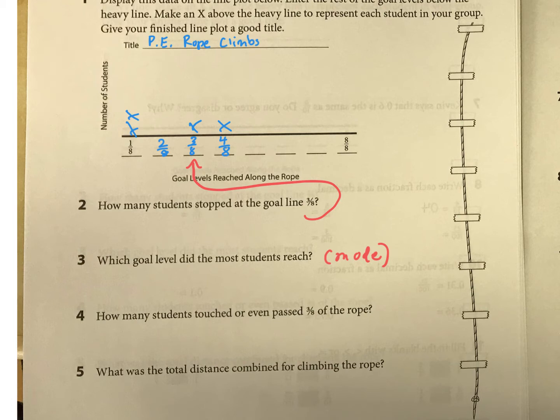And then how many students touched or even passed three eighths of the rope? So that's going to be basically anything to the right of three eighths and including three eighths. Count those X's, and then you'll see that total.